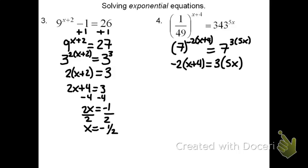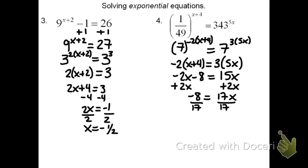I'll have to distribute. The negative 2 times quantity x plus 4 is negative 2x minus 8. And on the other side, I have 15x. I need to isolate the variable, which means get x by itself. Instead of adding the 8, I'm going to add 2x to both sides. This gets all my x's on one side and the constant on the other. The last step is divide, and I see that the answer is x equals negative 8 over 17.